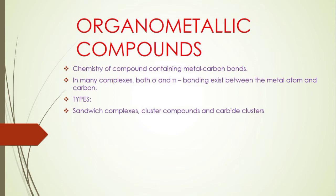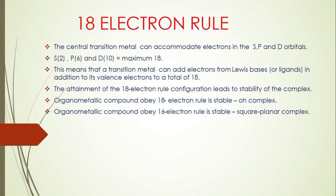Hi friends, I'm going to deal with the 18-electron rule in organometallic chemistry. First, we should know what an organometallic compound is. The chemistry of compounds containing metal-carbon bonds — compounds containing metal-carbon bonds are called organometallic compounds. In many complexes, both sigma and pi bonding exist between a metal atom and carbon atom. Examples include sandwich complexes, cluster compounds, and carbene clusters, all known as organometallic compounds.